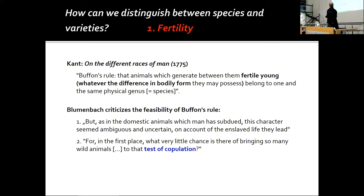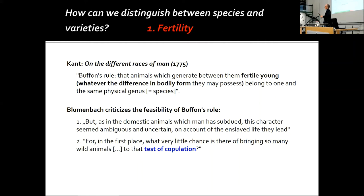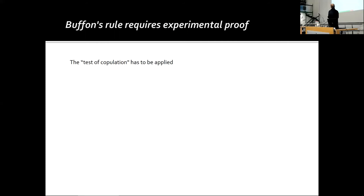Blumenbach criticizes this definition — not because he thinks it is untrue, but because it is not operable in anthropology. For domestic animals, the definition of fertility seems ambiguous and uncertain, and for Blumenbach, humans are the domestic animal as such. Furthermore, in the wild, how can you apply the test of population? To know if the Asian elephant and African elephant are one species, you would have to bring an Asian elephant to Africa — which at that time was very difficult. So it is hard in nature and requires experimental proof. This is an experimental criterion.